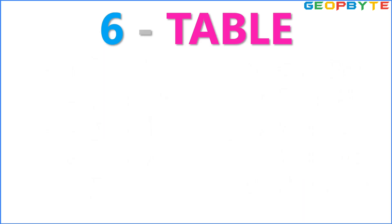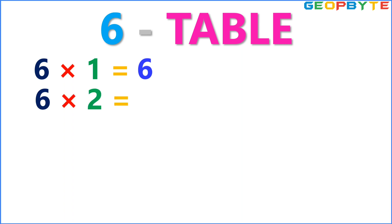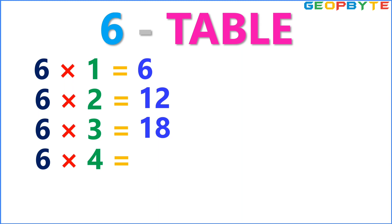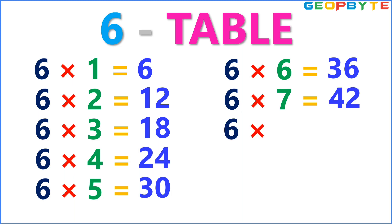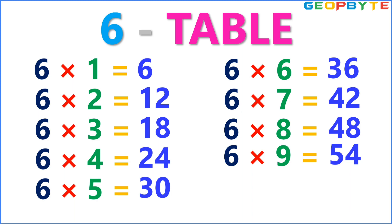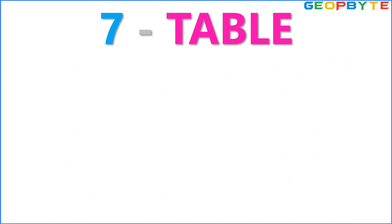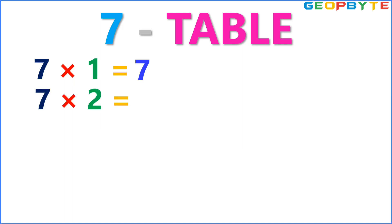Now let us see the 6 table. 6 1s are 6. 6 2s are 12. 6 3s are 18. 6 4s are 24. 6 5s are 30. 6 6s are 36. 6 7s are 42. 6 8s are 48. 6 9s are 54. 6 10s are 60.